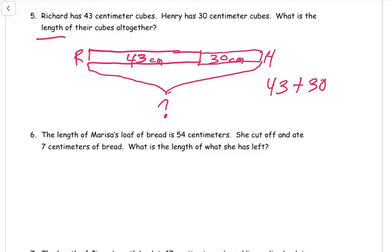And you could look at this, you might be able to just look at the digits and do this mentally. 43 plus 30, you don't have any ones to add with the 30. It's just adding three tens. So 40 plus 30 would be 70. And then don't forget these three ones here, 73. Now we need an answer sentence. Their cubes are 73 centimeters long altogether.